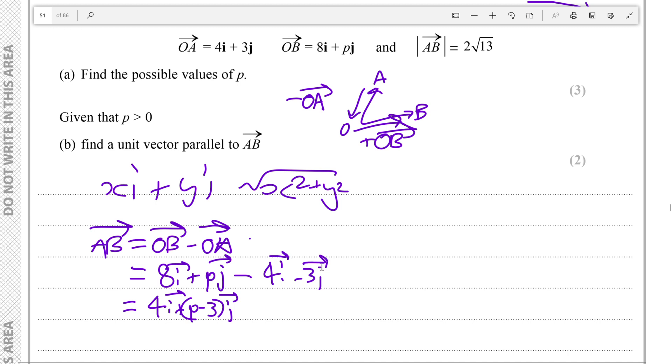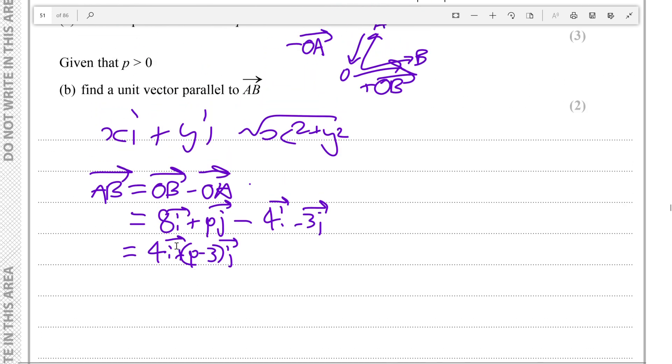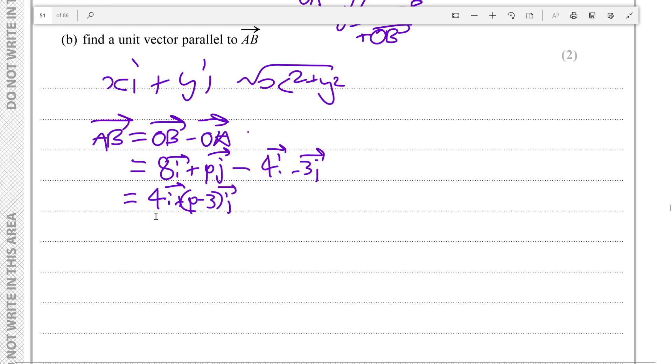So how do we get from here to magnitude of AB? Well, Pythagorean theorem: if it's 4 this way and p minus 3 this way, then surely this length here, the magnitude, would be root of 4 squared plus (p minus 3) squared. Now since we know that the magnitude of AB is 2 root 13.